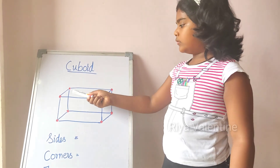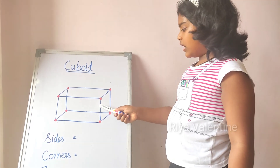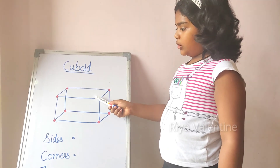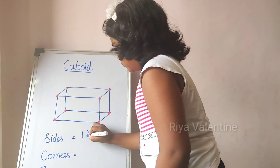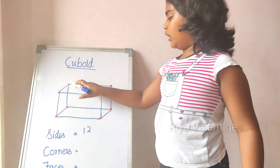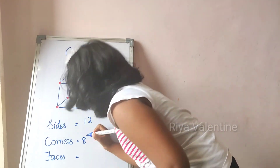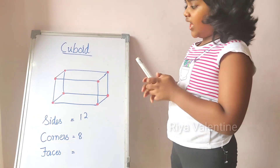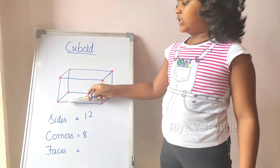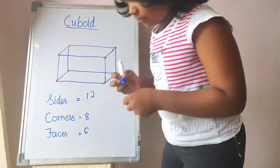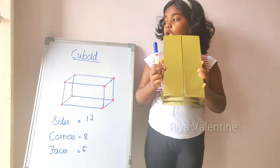Now let's look at the cuboid. The cuboid has twelve sides, eight corners, and six faces. Count the sides: 1, 2, 3, 4, 5, 6, 7, 8, 9, 10, 11, 12 — twelve sides. How many corners? One through eight — eight corners. And how many faces? One, two, three, four, five, six — six faces.